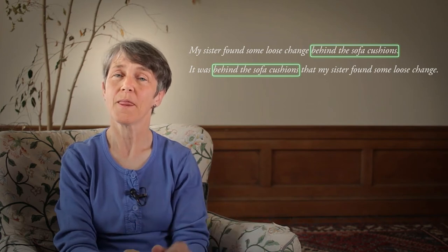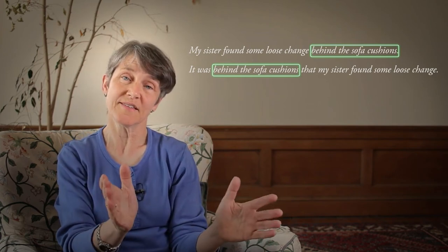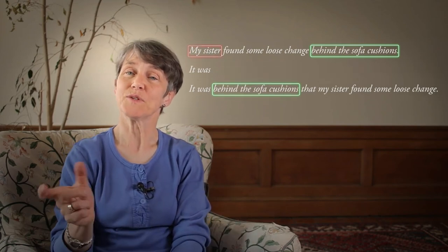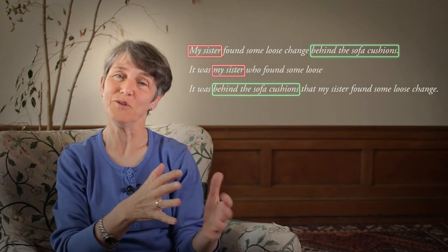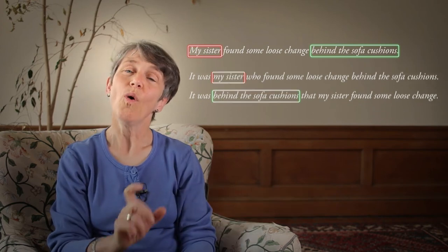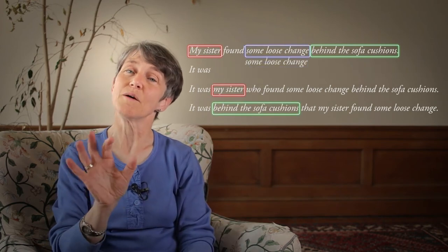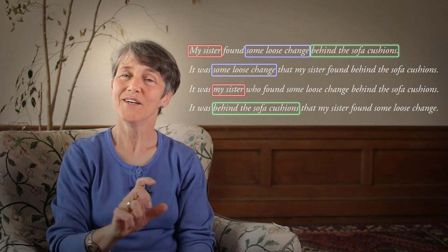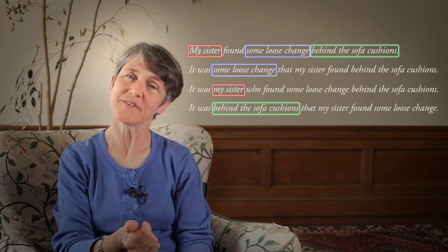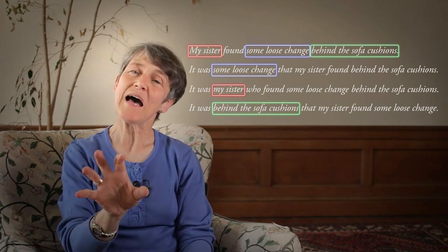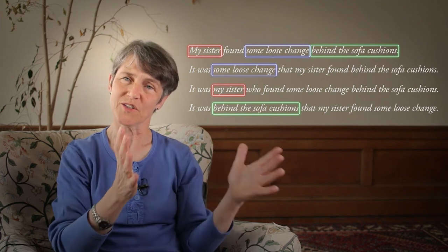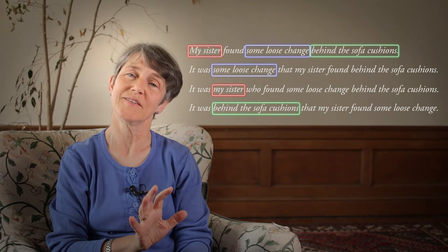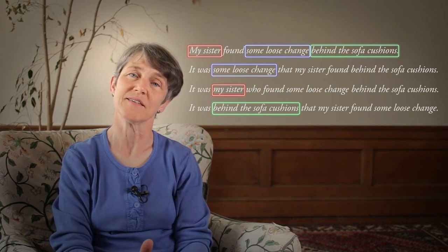There are other constituents in that sentence and other clefts that you could make. So you could say: 'It was my sister who found some loose change behind the sofa cushions,' or 'It was some loose change that my sister found behind the sofa cushions.' Each of those different clefts pulls out a different constituent from the original sentence, so now we have quite a lot of information about the constituency of that original sentence.